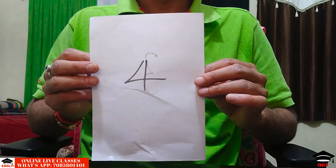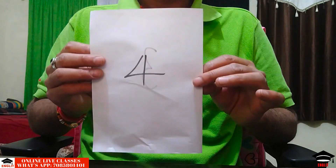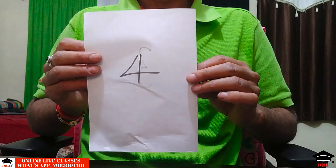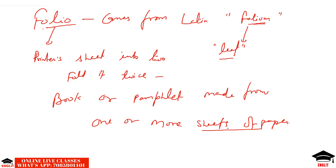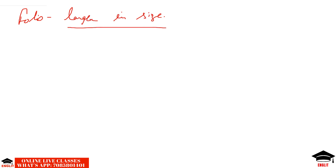After folding these sheets, if they are bundled together it would make a book form. So the corrected version of Shakespeare's plays were published in this format, this book form, which we also call folio. It is a kind of book or pamphlet made up of one or more full sheets of paper. Each sheet has two sides on which text is printed, and is folded once to produce two leaves. Folio is larger in size and contains much text.